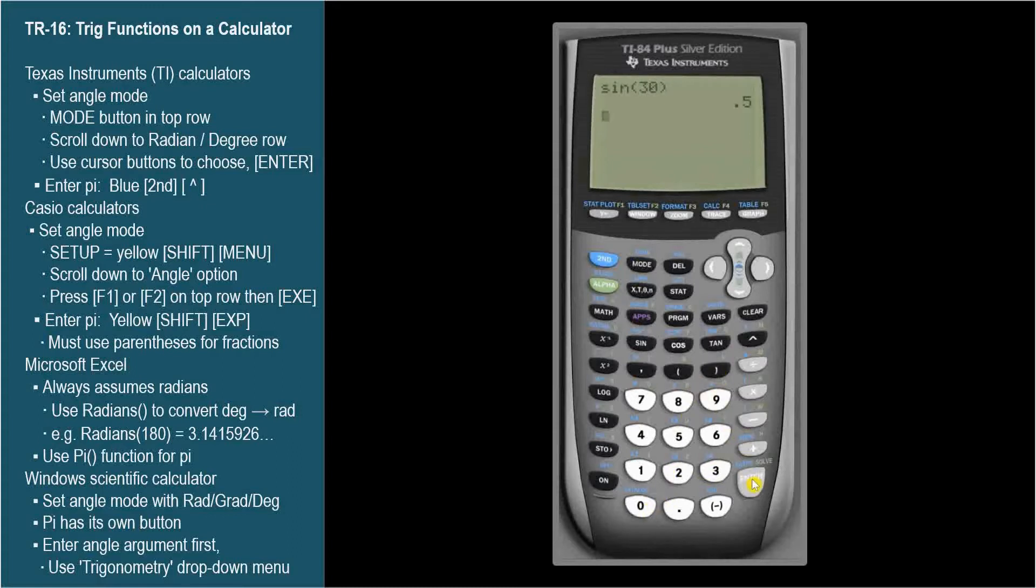The answer, 0.5, is displayed. If your answer was negative .988, then the calculator was in radian mode and told you the sine of 30 radians instead of the sine of 30 degrees.